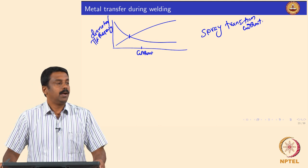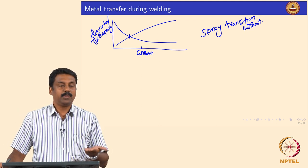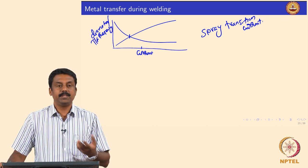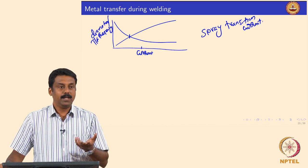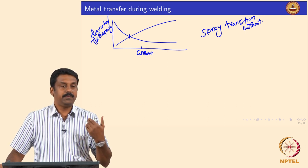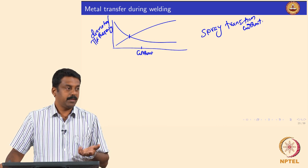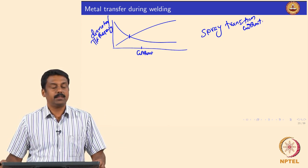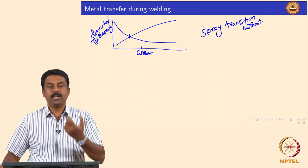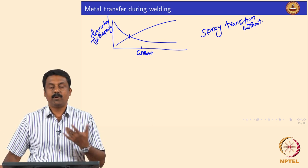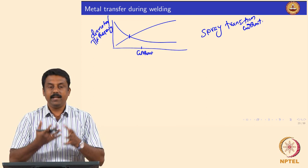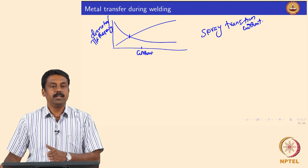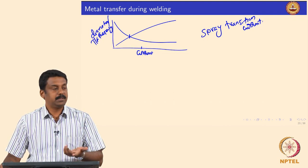Most GMAW operations are carried out in and around the spray transition to promote spray transfer and ensure stable transfer. If you increase the current further, the spray transition becomes jetting spray, with the possibility of creating spatter and explosion when the droplet is detached, due to tremendous increase in Lorentz force and vapor pressure. When current increases, current density increases, heat generated in the arc increases enormously, leading to more vaporization. Jetting spray or even rotating jetting spray or explosive transfer can take place.